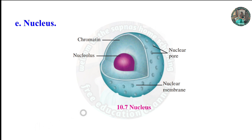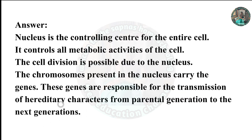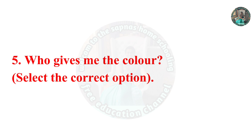Part E: Nucleus. Looking at the nucleus diagram. Answer: The nucleus is the controlling center of the entire cell; it controls all metabolic activities. Cell division is possible due to the nucleus. The chromosomes present in the nucleus carry the genes, which are responsible for the transmission of hereditary characters from the parental generation to the next generation.